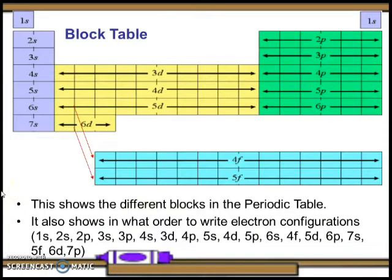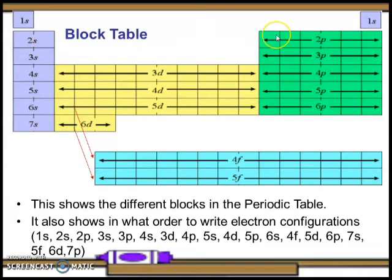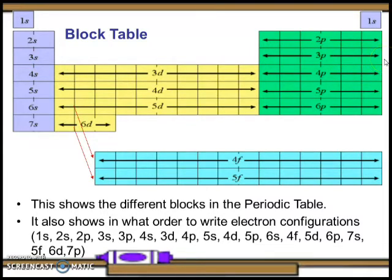This illustration shows the different blocks — s, p, d, and f — in the periodic table. It also shows the order in which to write electron configurations, starting with 1s¹, 1s² all the way through 2s, 2p (1 through 6), then 3s, 3p, 4s, 3d, 4p, 5s, 4d, 5p, 6s, 4f, 5d, 6p, 7s, 5f, and 6d.